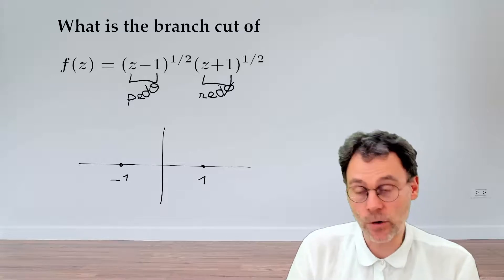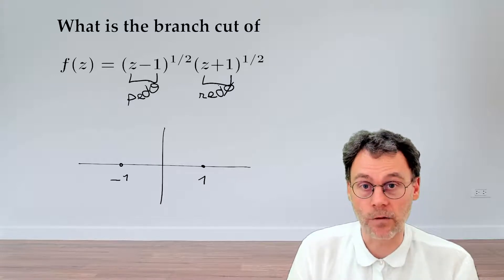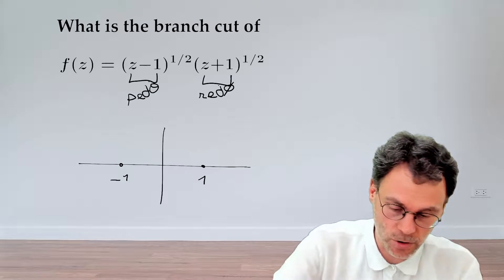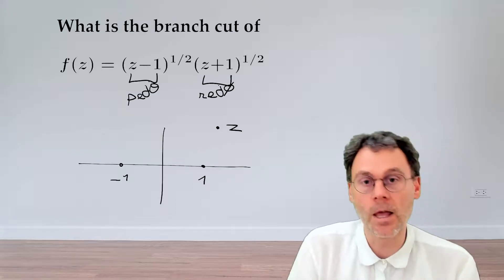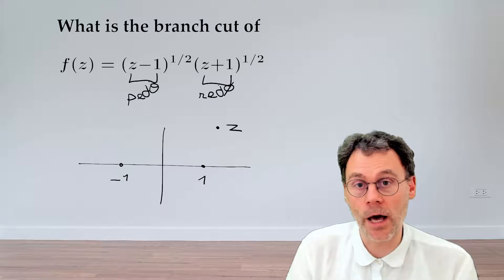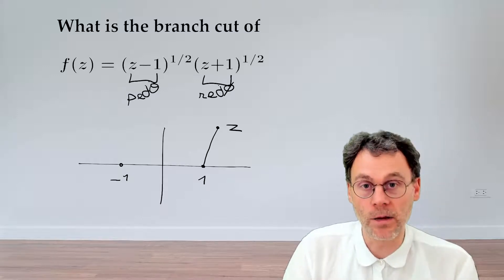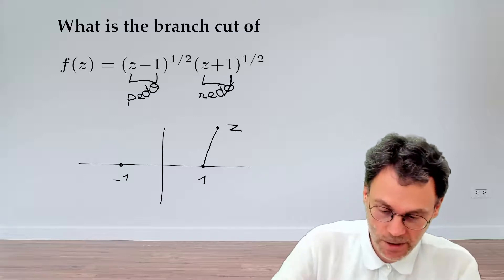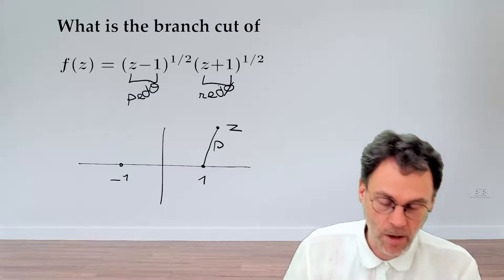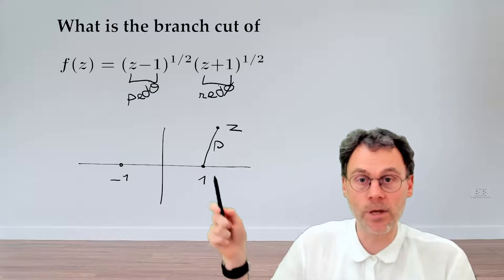Next step is where do we find the angles theta and phi, so let's just draw our complex number z here. Now if we draw a line from z to 1, if you think about it, the length of that line is going to be rho.